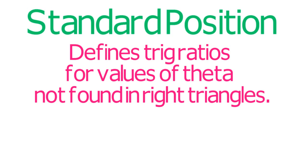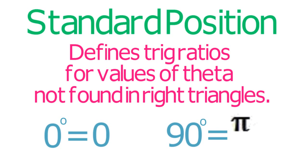Two such values are 0 and 90 degrees, that is, 0 and pi over 2 radians.